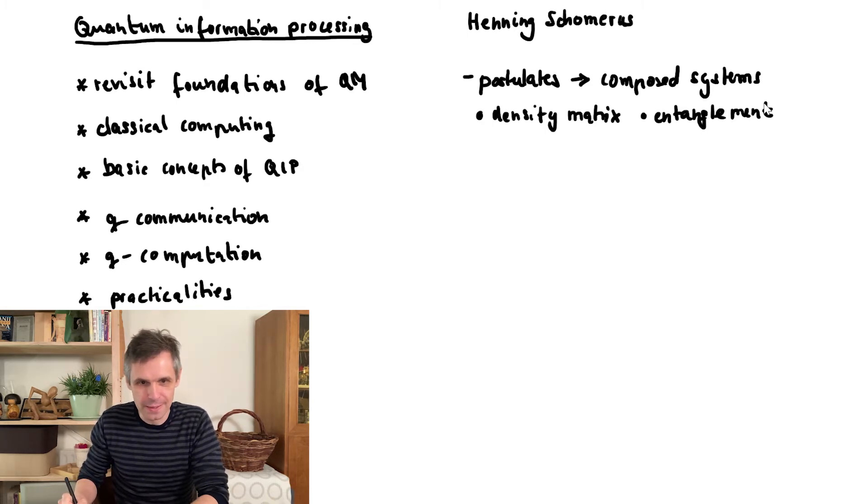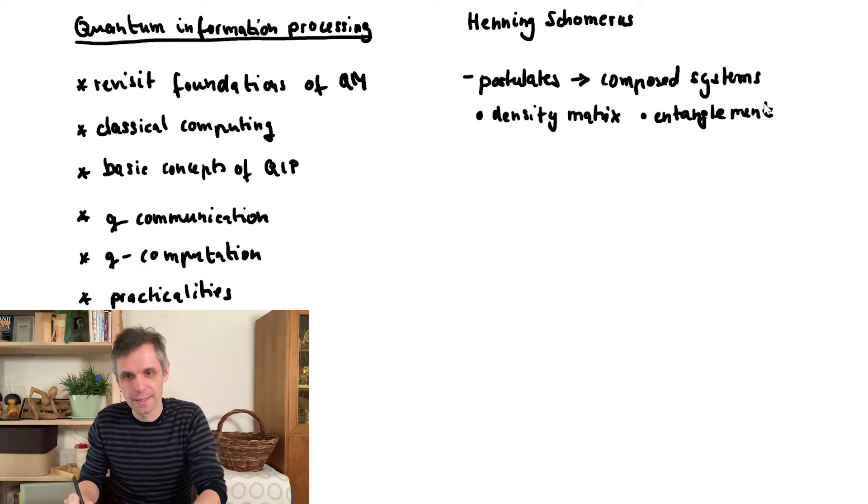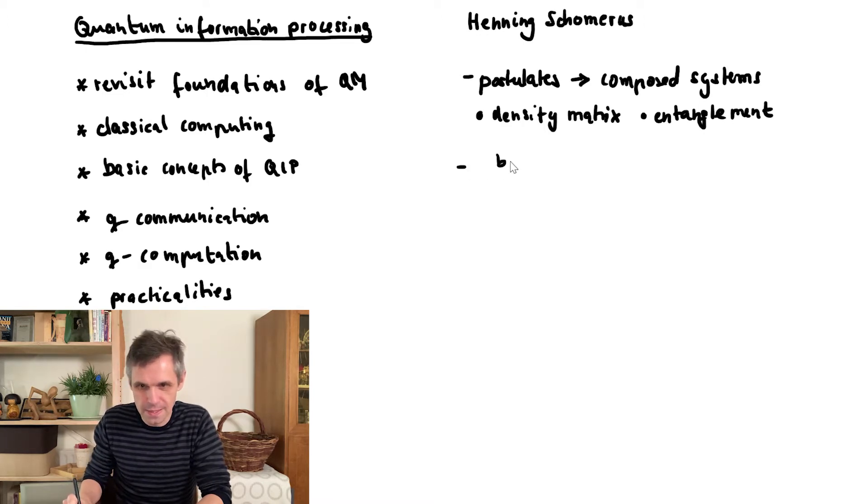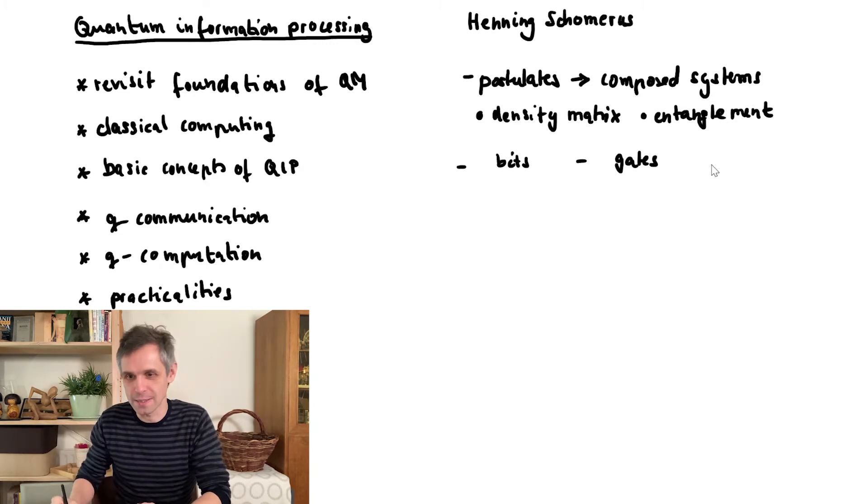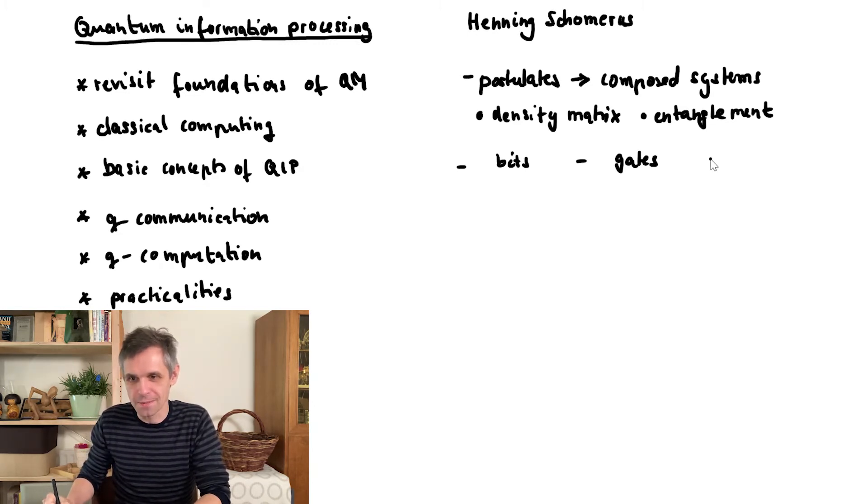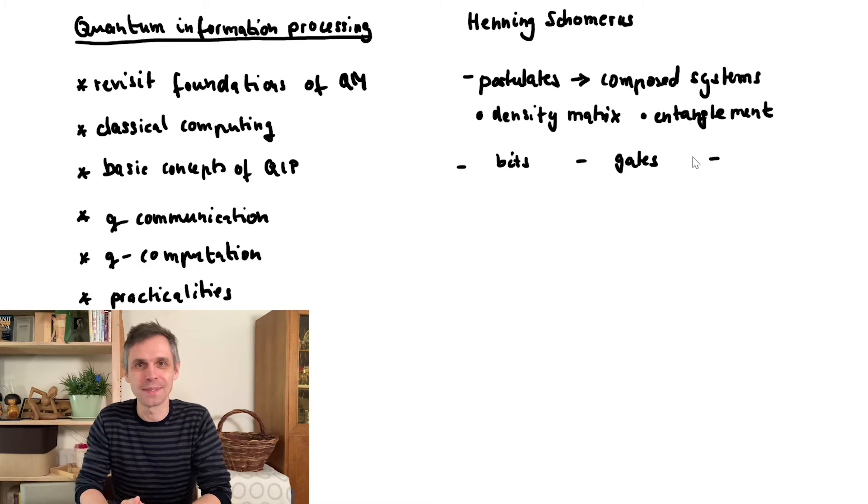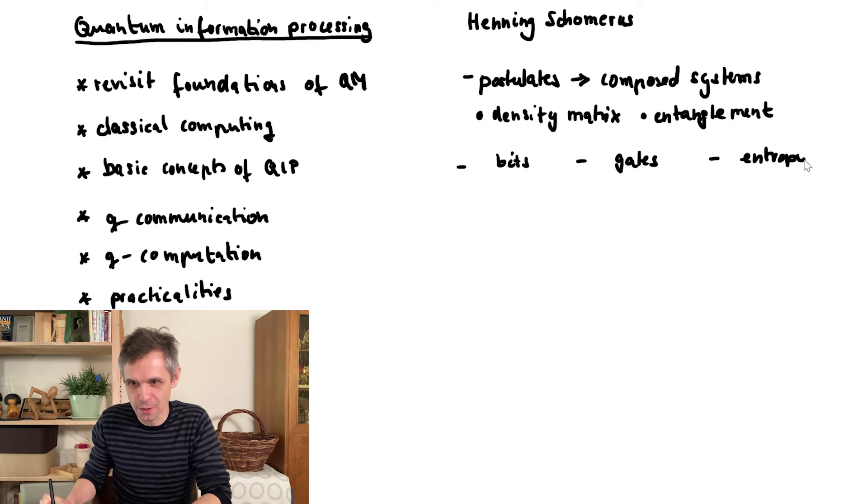Okay, then when we look at classical computation, we're really focusing on the most basic concepts. And these are things like bits, gates, and ways in which we can actually quantify information on a classical level, which has a very nice physical interpretation in terms of an entropy. So we are going to look at the link between information and entropy.